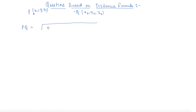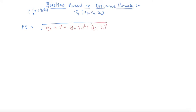The distance formula is: the square root of (x2 minus x1) squared plus (y2 minus y1) squared plus (z2 minus z1) squared. Now I am writing the first question.